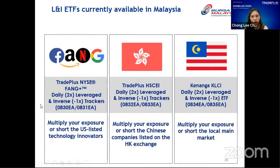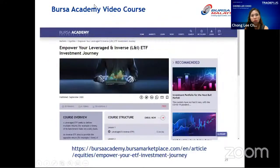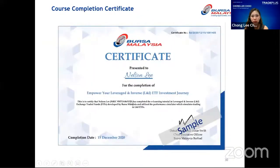The FANG leverage ETF code is 0830EA and the FANG inverse ETF code is 0831EA. You can go to the Bursa Academy website to complete the tutorial course, and after completion you will receive a certificate. We also have a performance simulator at tradeplus.com.my where you can adjust dates to see the performance of each ETF.